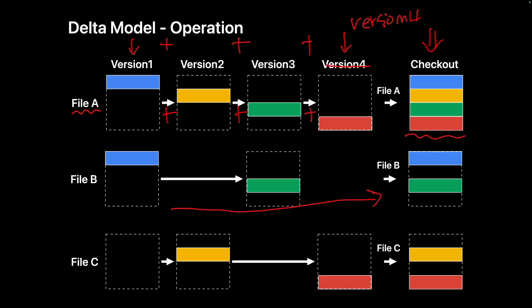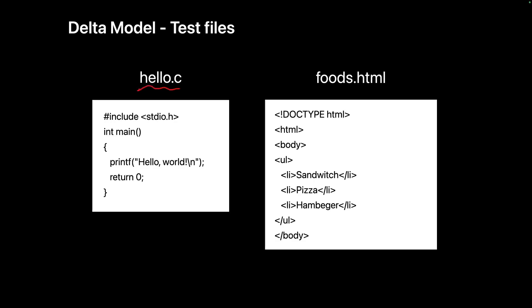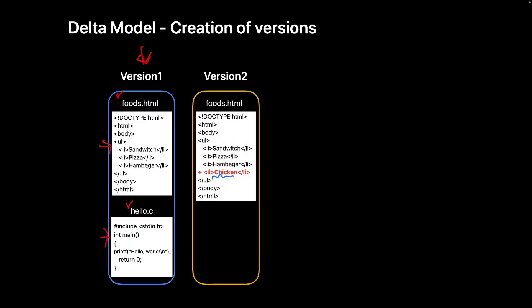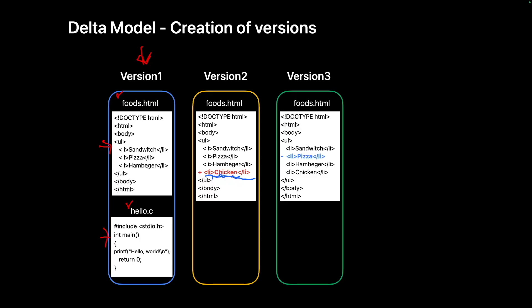Let's dive into a more detailed example. Here we have two files: hello.c and foos.html — one is a C file and the other is an HTML file. In the first version, the unchanged initial state of both files is saved. A line containing 'chicken' was added to the foos file. There are no changes to hello.c, so nothing is saved in version 2 for this file.